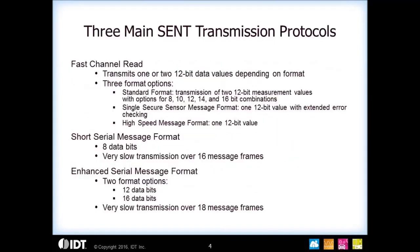There are two ways to transmit data on SENT. One is using fast channels to bring out the primary sensor information, like pressure or throttle position. But there's also in the background a slow channel message that can be transmitted, allowing you to bring out things like diagnostics.